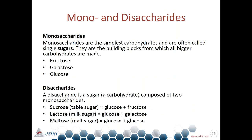Mono and disaccharides are included in the definition of added sugar. Monosaccharides are the simplest carbohydrates — called single sugars — and the building blocks from which all bigger carbohydrates are made. Examples include fructose, galactose, and glucose. Disaccharides are composed of two monosaccharides: sucrose (table sugar) is a combination of glucose and fructose, and lactose (milk sugar) is a combination of glucose and galactose.